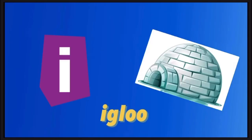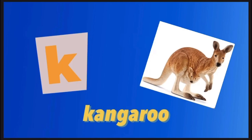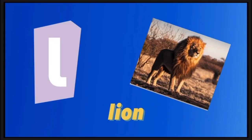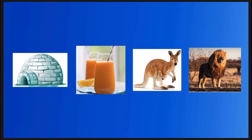I is for Igloo. I, I. Igloo. J is for Juice. J, J. Juice. K is for Kangaroo. K, K. Kangaroo. L is for Lion. L, L. Lion.